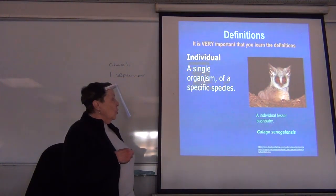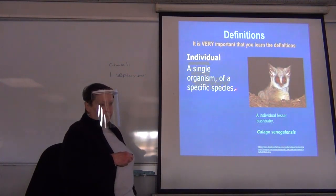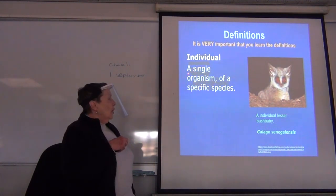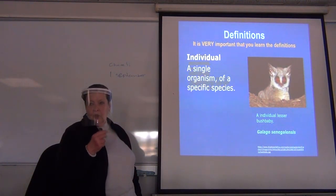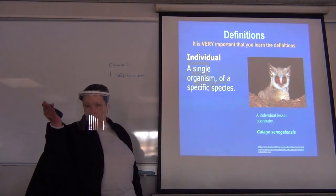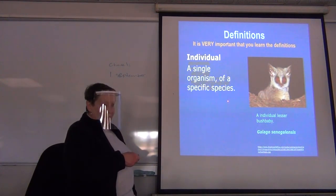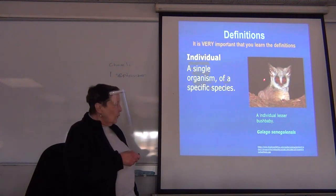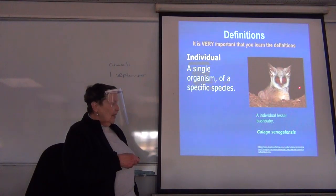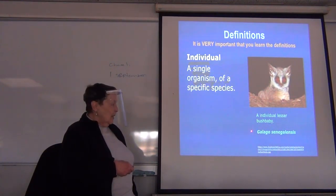An individual is a single organism of a specific species. In English terms, if I said what is an individual, you'd probably say one unit of — but you've got to say of a specific species. So this is an individual lesser bush baby, and its scientific name is Galago senegalensis.